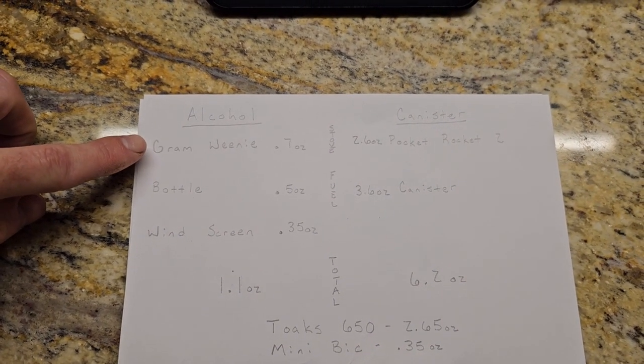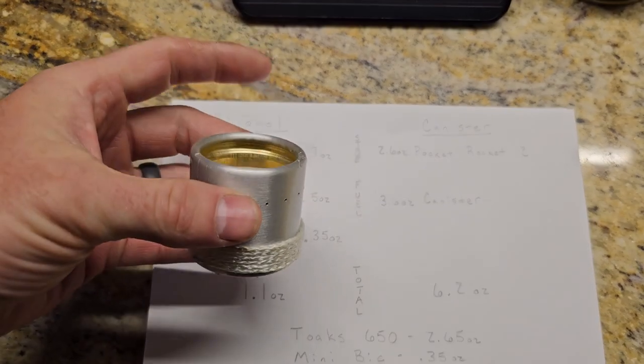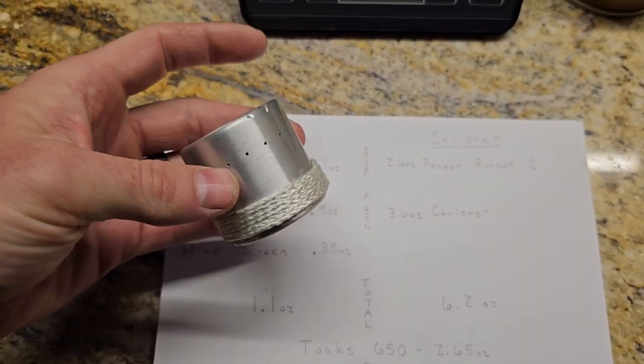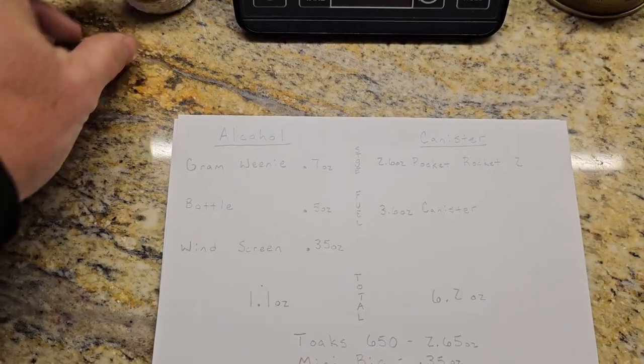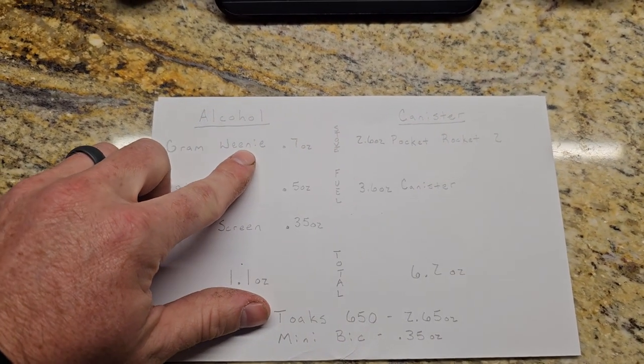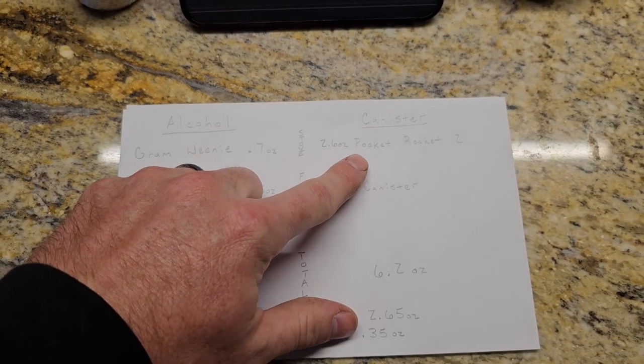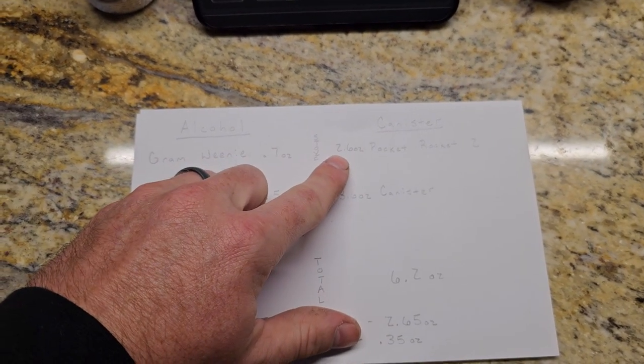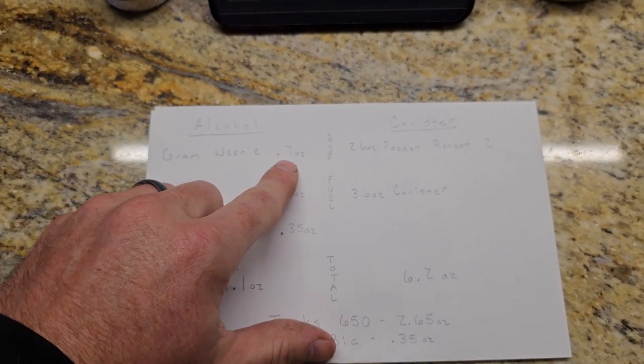So just the weight of the stove - the Gram Weenie, which is this little tiny alcohol stove made out of a beer bottle, weighs a mere 0.7 ounces, super lightweight, whereas my Pocket Rocket 2 weighs in at 2.6 ounces. You can see that's a really big savings.